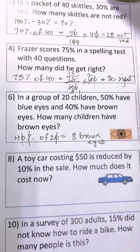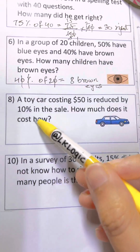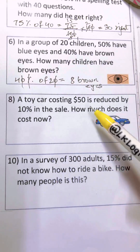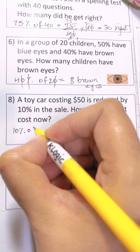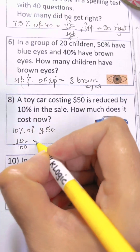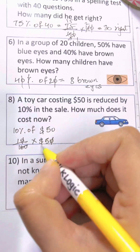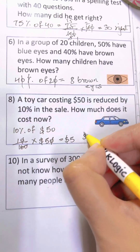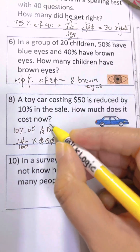Question number eight: a toy car costing $50 is reduced by 10% in a sale — how much does it cost now? Find 10% of $50: 10 over 100 times 50, cancel out the two zeros, you're left with 5. That means $5 is reduced from $50. So $50 minus $5 equals $45 — that's the cost now.